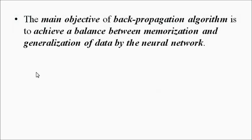The main objective of the backpropagation algorithm is to achieve a balance between memorization and generalization of the data. The basic objectives of a neural network are three things: learning, generalization, and application. Learning means being exposed to new data, new stimulus, new environment, new surroundings — then the neural network, when exposed to a new environment, tries to adapt and adjust to the changing environment.